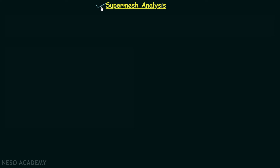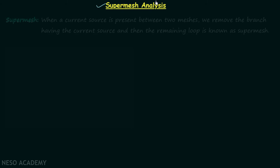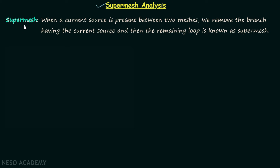First I will give you the meaning of super mesh, and then we will take one example problem to understand how to perform the super mesh analysis. A super mesh is a loop formed when a current source is present between two meshes — we remove the branch having the current source, and the remaining loop is known as the super mesh.